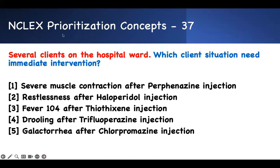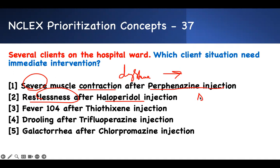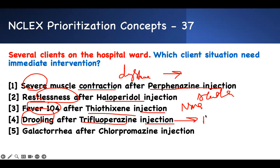Question 37 — several clients, which needs immediate intervention from antipsychotic side effects? Severe muscle contractions after phenothiazine — dystonia. Restlessness after haloperidol — akathisia. Fever of 105 after depot injection — neuroleptic malignant syndrome (NMS). Drooling after fluphenazine — Parkinsonism. Galactorrhea after chlorpromazine — side effect of first or second generation antipsychotics. Among dystonia, akathisia, NMS, Parkinsonism, and galactorrhea, the one that will kill the patient immediately is NMS. The rest can be treated with medication. NMS is your priority.